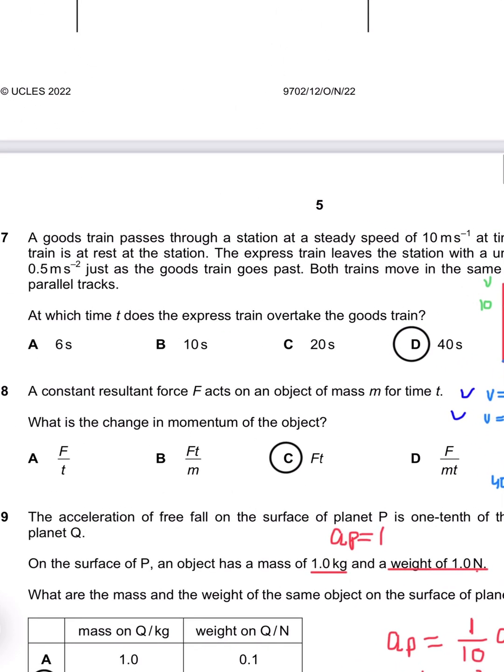Question 8 says, what is the change in momentum if force f and mass m times t? Change in momentum is ft, so C is the appropriate answer.